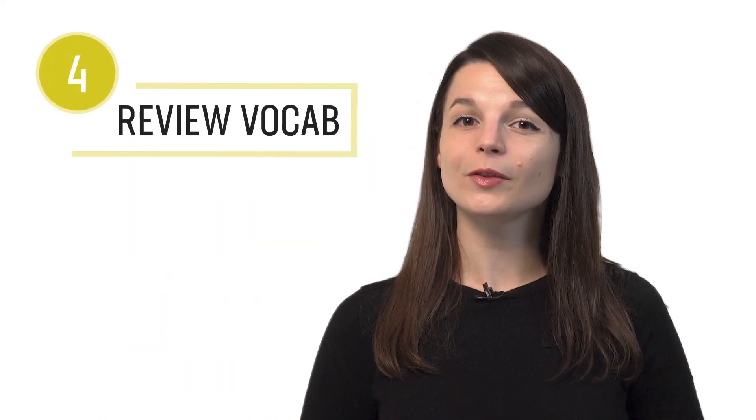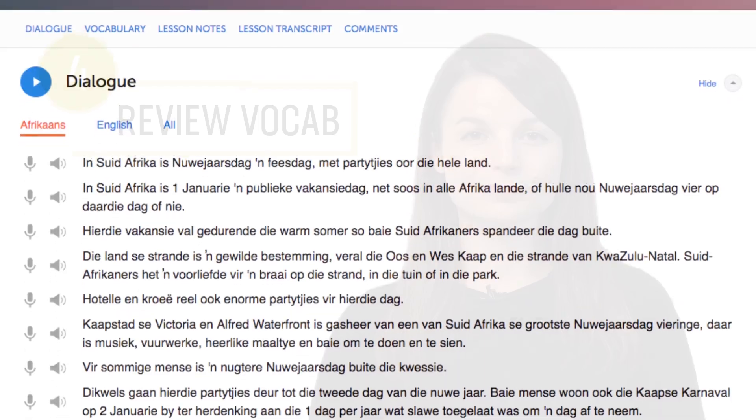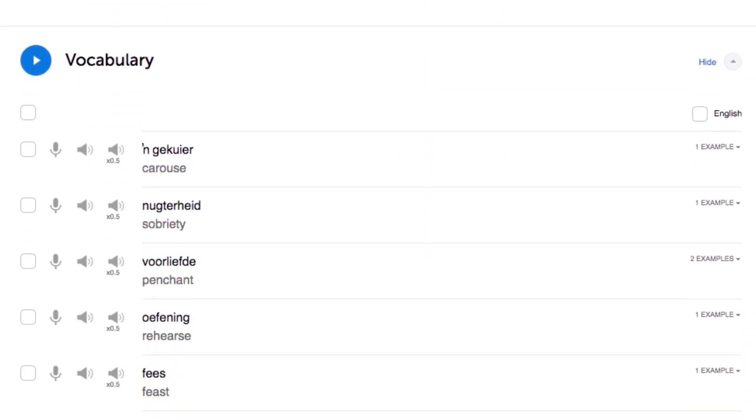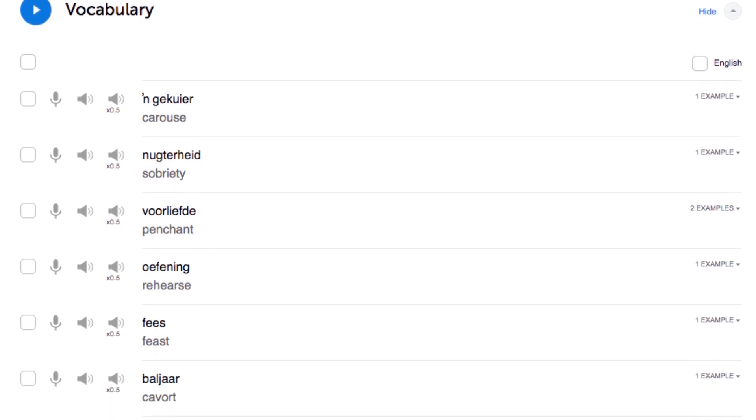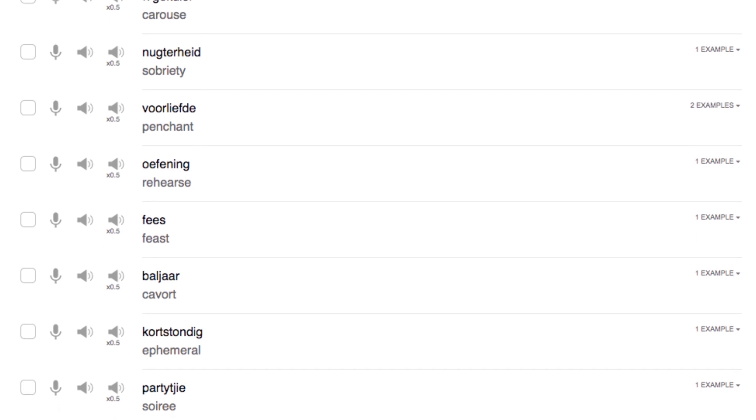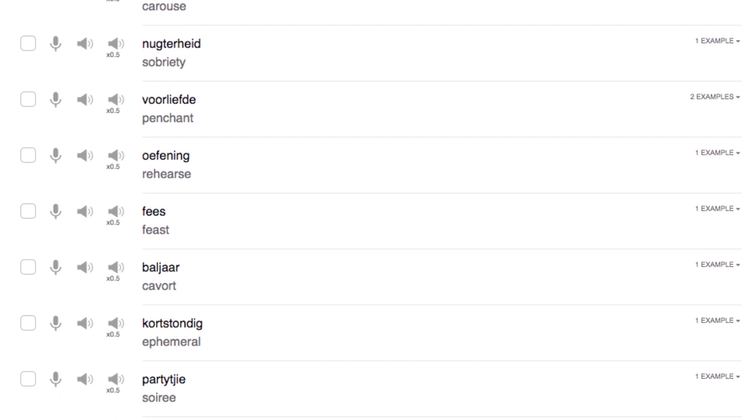Number four, review the lesson vocabulary section. Want to master the key vocabulary from a lesson? Access the vocabulary section of any lesson. Here you can review the translations and the audio pronunciations of each word. You can even play slowed down pronunciations to fully grasp each word.